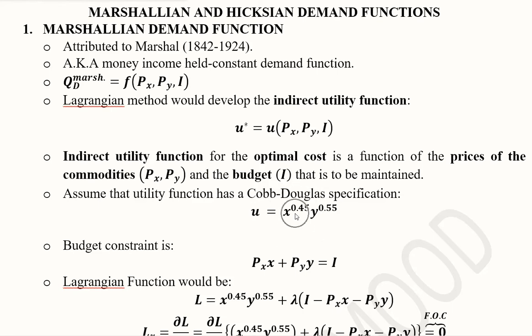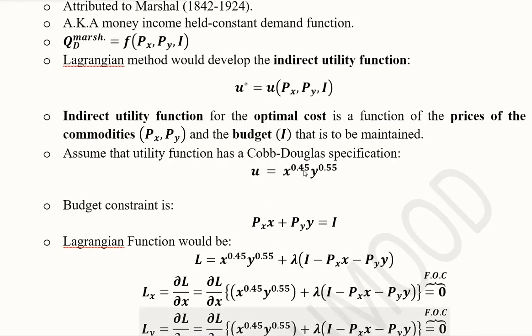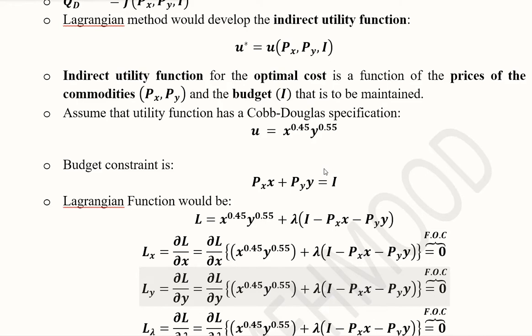Here you can see the sum of the powers is equal to 1, which makes it a standard form of a Cobb-Douglas utility function. Since we have a utility function we should also have the budget constraint, and this is the standard linear form of the budget that we usually use in our analysis.